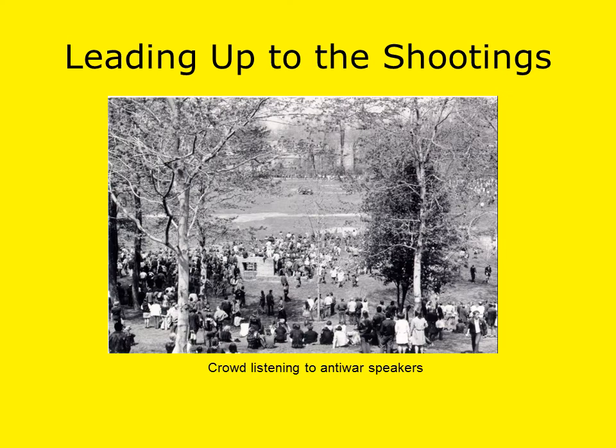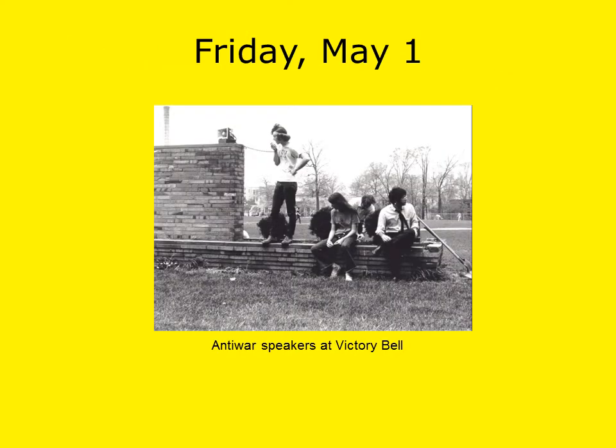Students at Kent State held a protest on May 1st at the Victory Bell on the campus of Kent State. The Victory Bell is an old locomotive bell that was donated to Kent State by the Erie Railroad, and it was often rung after athletic events. A vocal anti-war rally was held in downtown Kent as students left local bars on Friday, May 1st. The weather was unseasonably warm, and students had been outdoors quite a bit in recent days.